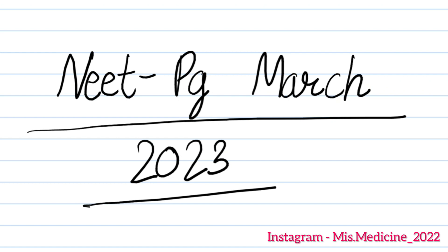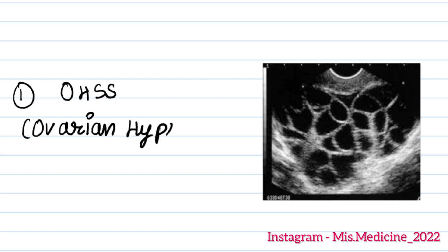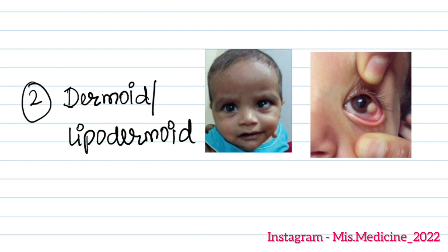If you are new here, subscribe to the channel and follow us on Instagram and Facebook. The first image given was OHSS — ovarian hyperstimulation syndrome. In the last question, options were dermoid or lipodermoid.